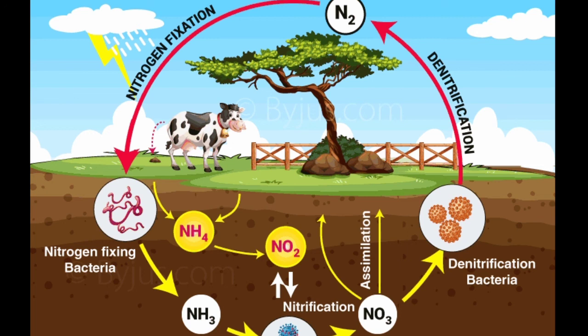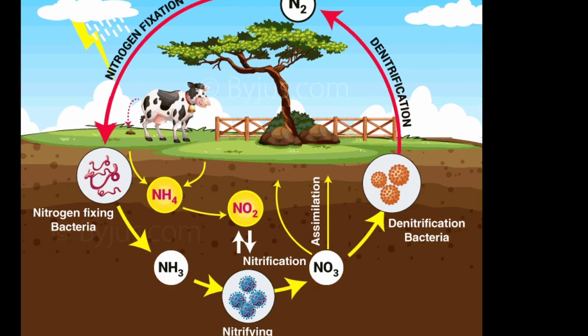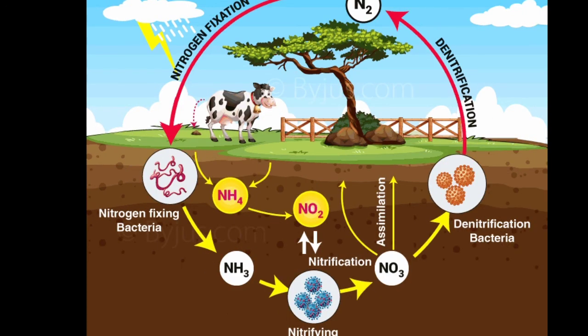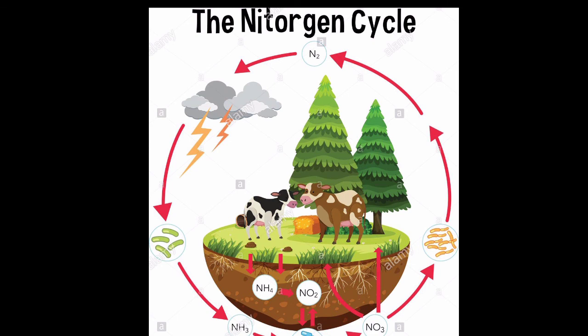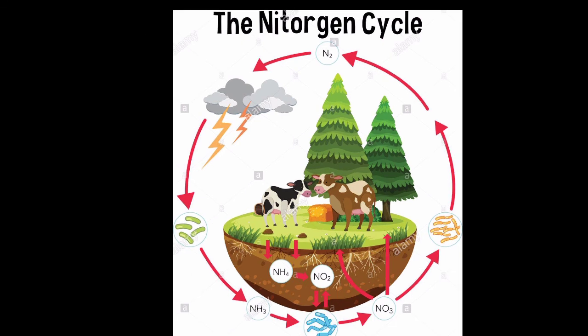Let us see how. Nitrogen fixation — in this step, nitrogen is converted into nitrate and nitrite through atmospheric, industrial, and biological processes. Ammonification — ammonia is released through decomposition of dead animals and excreta waste of organisms. Nitrification — ammonia is converted into nitrite and then nitrate. Denitrification — it involves the conversion of nitrogen compounds into gaseous nitrogen. So here we end with this chapter. All the best for the study.